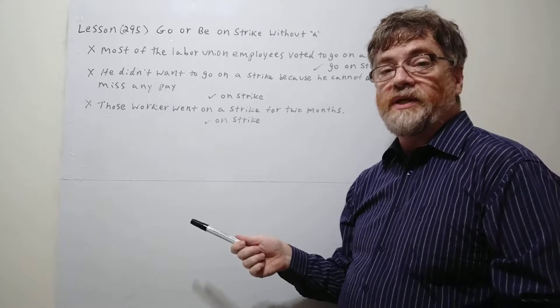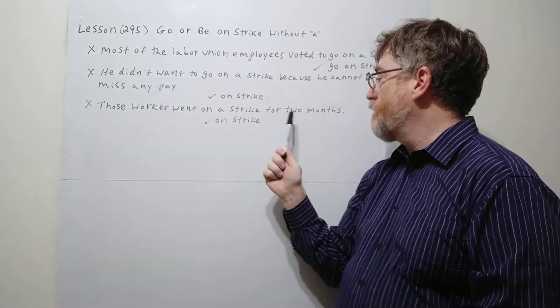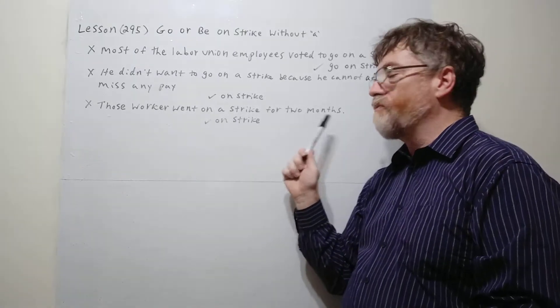And the last example here. Again with the X, this is wrong. Those workers went on a strike for two months. No. Those workers went on strike for two months.